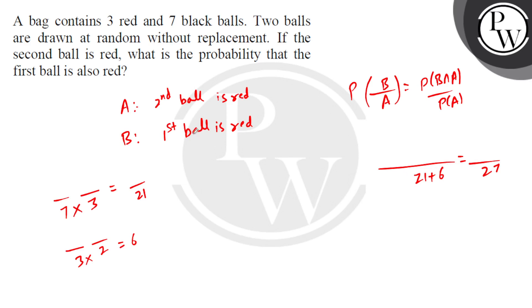Now, second and first both red. That means these are our favorable outcomes. So, that is 6.